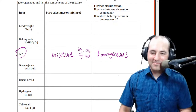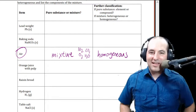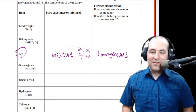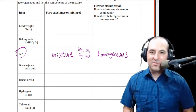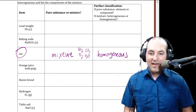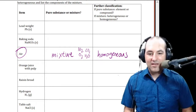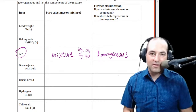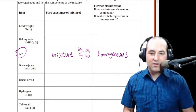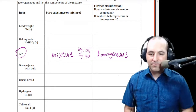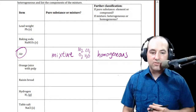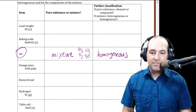We talked last time about how we determine first if something's a pure substance or a mixture, and then the further classification: is it an element or a compound, and is it a homogeneous or heterogeneous mixture? So let's take that two-step method throughout this table to review from last time.